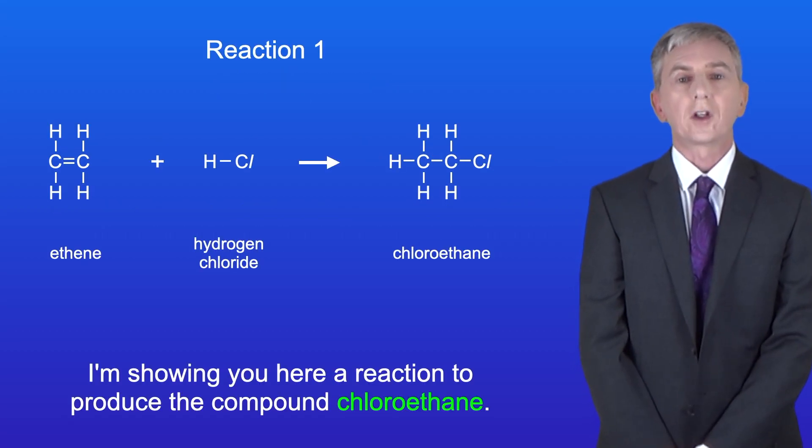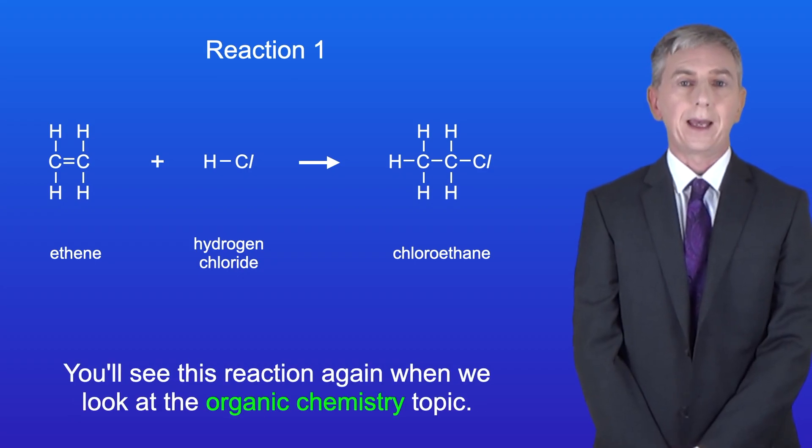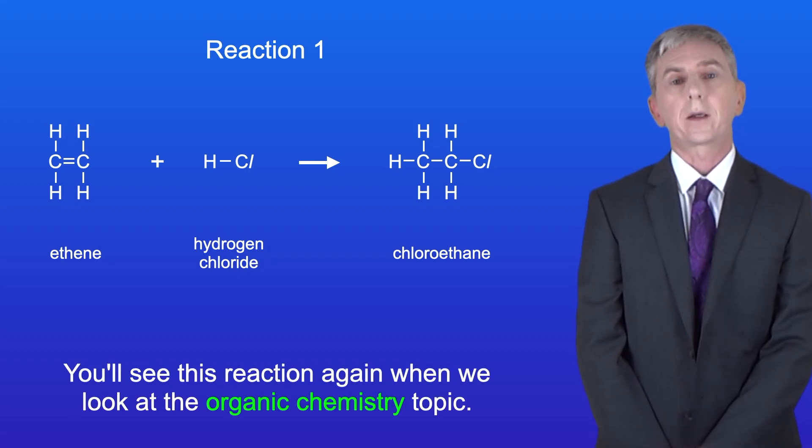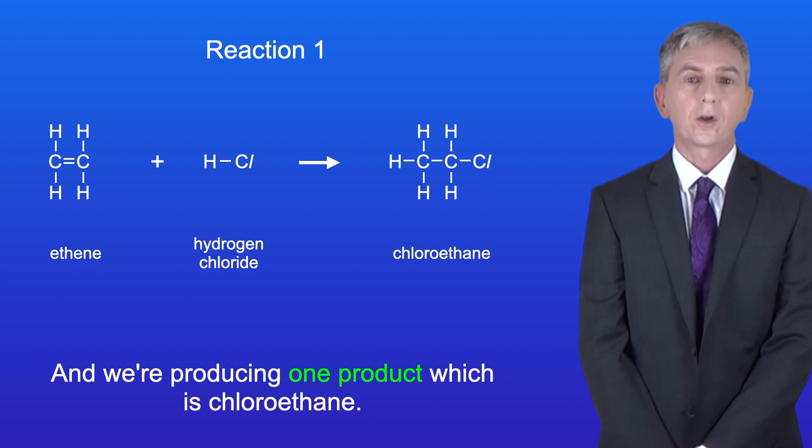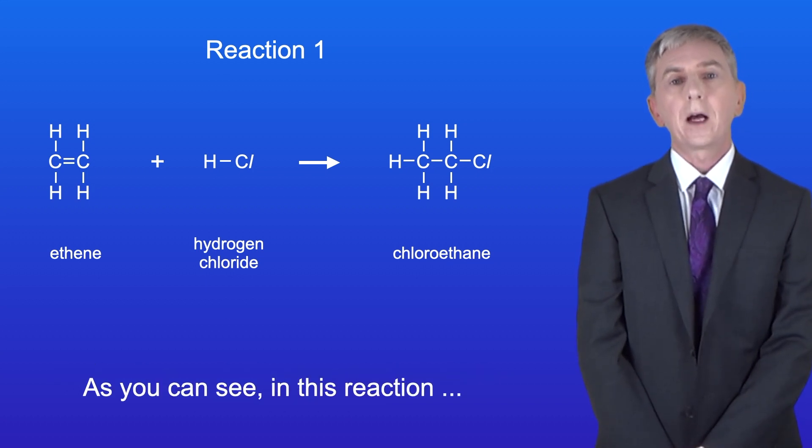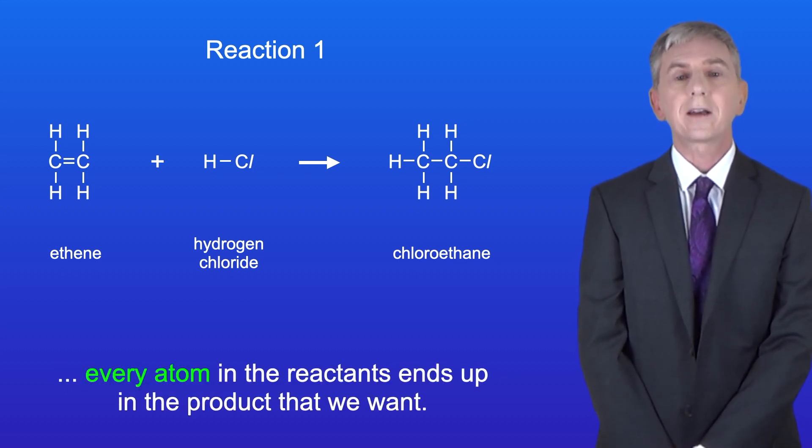I'm showing you here a reaction to produce the compound chloroethane. You'll see this reaction again when we look at the organic chemistry topic. In this reaction we're starting with the reactants ethene and hydrogen chloride and we're producing one product which is chloroethane. As you can see in this reaction every atom in the reactants ends up in the product that we want.